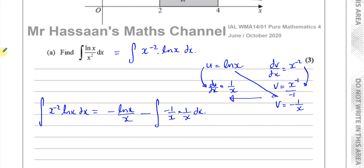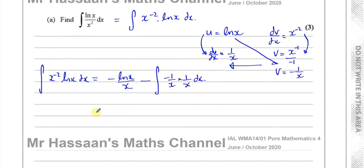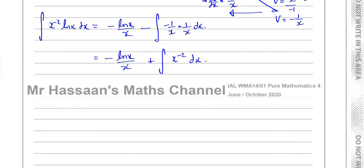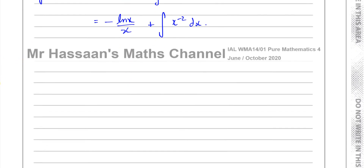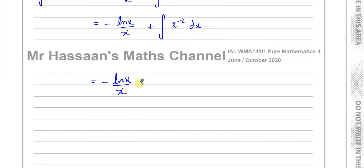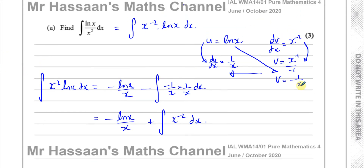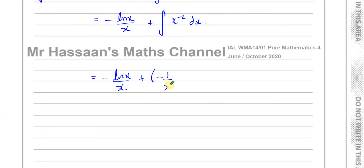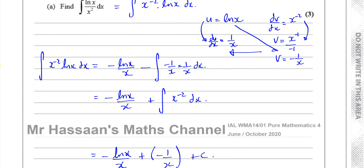Applying this, the integral of x to the minus 2 times ln x dx equals minus ln x over x, minus the integral of minus 1 over x times 1 over x dx. The negatives combine, giving plus the integral of x to the minus 2 dx. Integrating that gives minus 1 over x. So the final answer for Part A is: minus ln x over x minus 1 over x plus c, which is the integral of ln x over x squared.